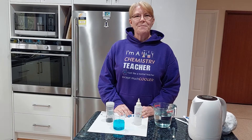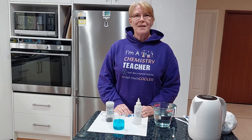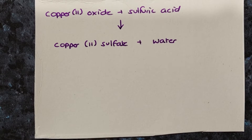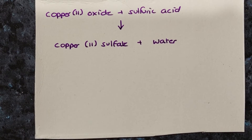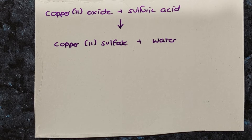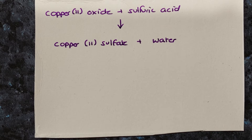Did you enjoy that one? That's one of my favorite chemical changes. Let's have a look at the equation for this reaction. This has been the reaction of a metal oxide with an acid, and we know that produces a metal salt and water. In this case the metal salt is copper(II) sulfate, because sulfuric acid makes sulfate salts.